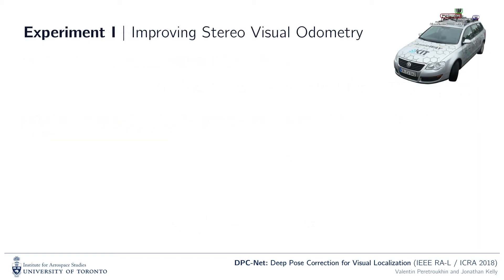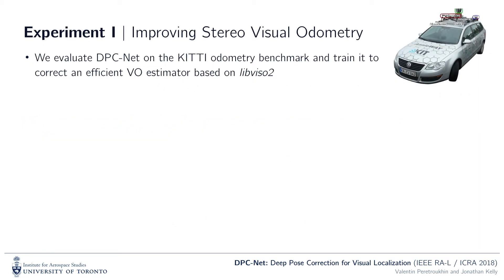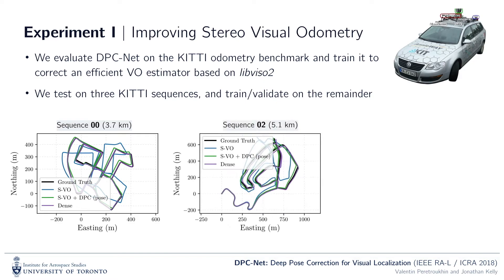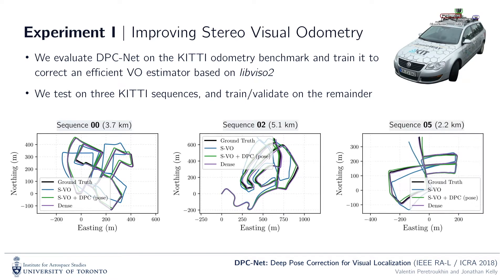We evaluate DPCnet on the KITTI odometry benchmark. We choose to correct an efficient frame-to-frame stereo visual odometry pipeline based on LibVISO2. Here, you can see the resulting top-down plots for three selected test sequences of our uncorrected and corrected localizations compared to a modern, dense-direct, keyframe-based VO algorithm.